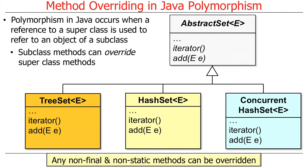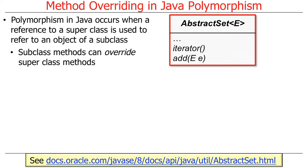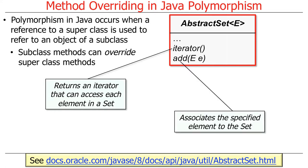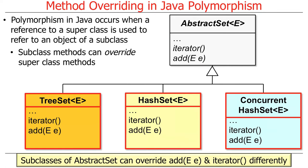Any non-final and non-static methods can be overridden. If something is final, you can't override it; if it's static, you can't override it either. AbstractSet has methods like iterator and add. Iterator returns an iterator to access each element in a set; add says how to add an element. Different kinds of sets — like TreeSet — can override add and iterate and implement them in different ways. The different types of sets have different time and space trade-offs; a TreeSet is implemented as a balanced binary tree.